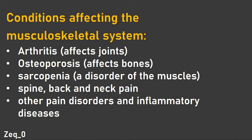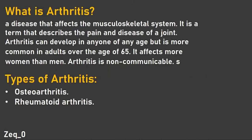The first condition is arthritis, osteoporosis, sarcopenia. We also have common pain and inflammatory disorders. Arthritis is a disease that affects the musculoskeletal system, especially joints of the musculoskeletal system. Joints are parts of bones that connect bones together, and they usually give us the ability to move. It can develop in anyone, but it's usually developing in people over the age of 65. It's usually referred to as a degenerative disease, which means it is a result of aging, and sometimes it's a result of an immune system disease.